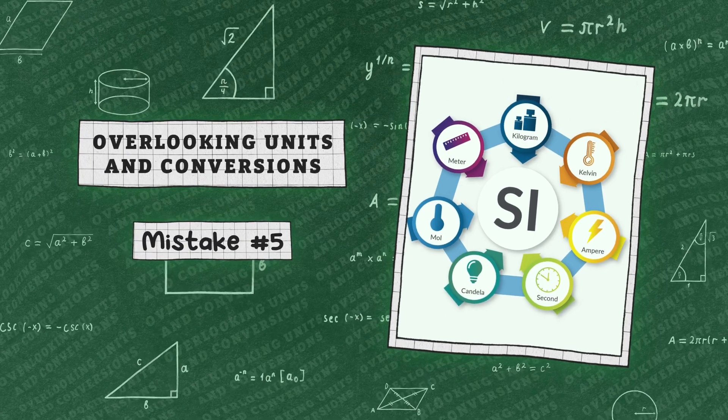Mistake number 5: overlooking units and conversions. The GMAT loves to test your ability to work with different units and perform conversions. Let's try a question that helps us better understand the units.